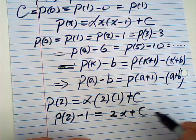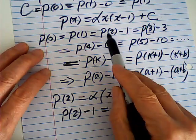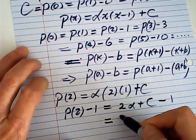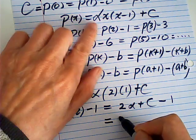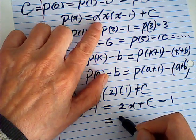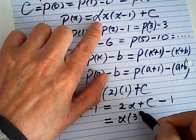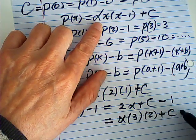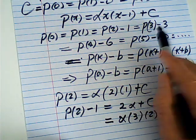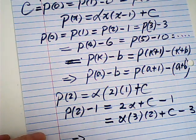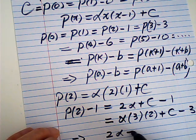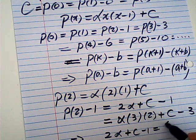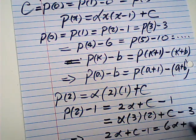P(2) minus 1 is P(3) minus 3. This is equal to P(3). P(3) is α times 3 times 2 plus C, minus 3. So this says that 2α plus C minus 1 is equal to 6α plus C minus 3.